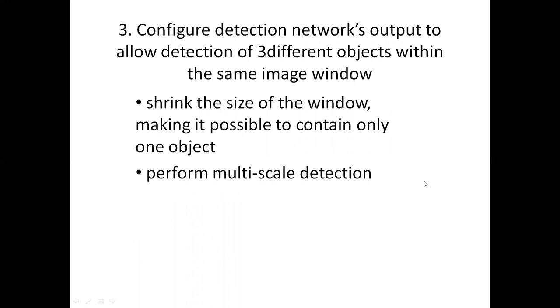Configure detection network's output to allow detection of three different objects within the same image window. The first idea is to shrink the size of the window, making it possible to contain only one object in a window. And the second one is to perform multi-scale detection that makes you able to detect multiple objects in the same image window.